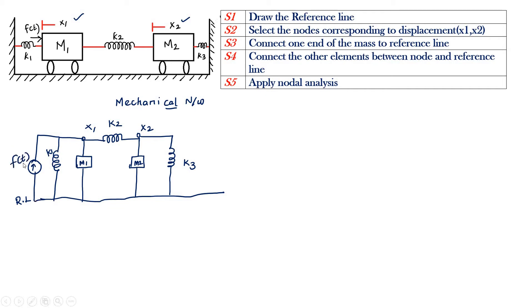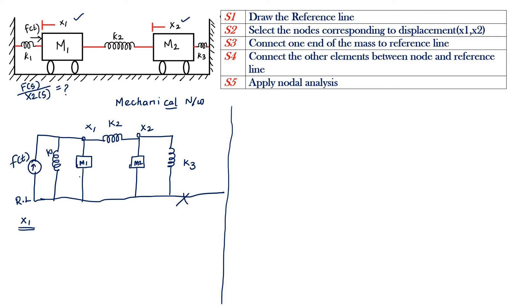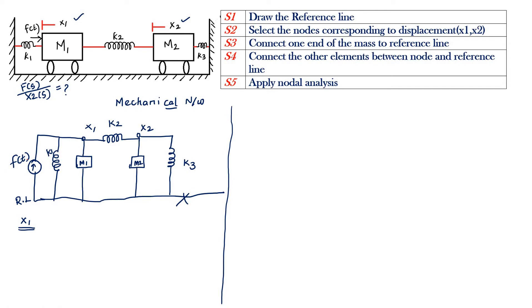This is the mechanical network. From the mechanical network, I am going to apply the nodal analysis and write the nodal equation. Afterwards, I am going to convert the equation in the S domain by applying Laplace transform, then find F of S by X2 of S. First, with respect to node X1, I am going to write the equation. The elements connected to the node X1 are M1, K, and F of T. F of T is the force input; the remaining are all internal forces.